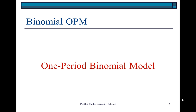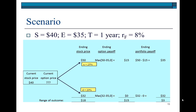Here, I show a one-period binomial model example. We consider a stock currently selling for $40 per share. A call option is written on this stock with an exercise price of $35. Expiration time for the option is one year, and currently the risk-free interest rate is 8% per year.